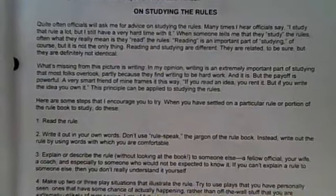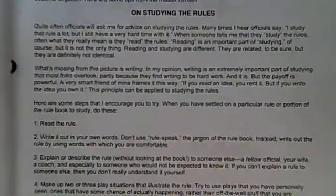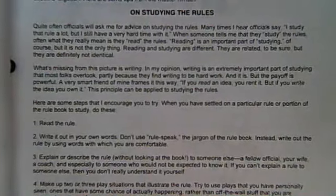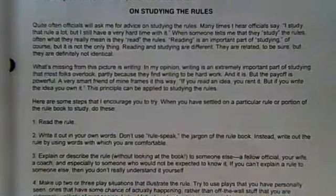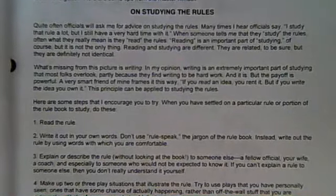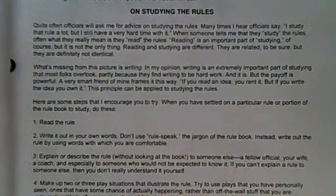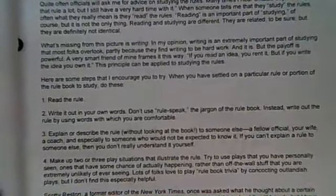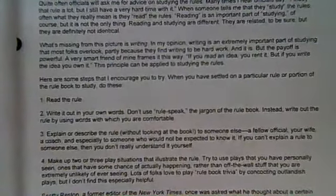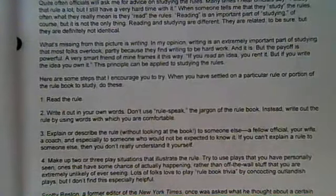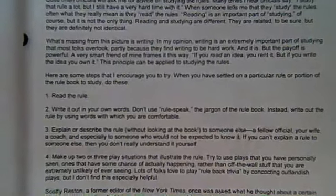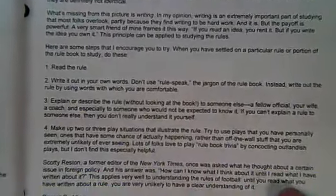Rogers Reading's tips for studying a rule: First, read the rule. Second, write it out in your own words — don't use rule-book jargon; instead write using words you're comfortable with. Third, explain or describe the rule without looking at the book to someone else — a fellow official, your wife, a coach, or especially someone who wouldn't be expected to know it. If you can't explain the rule to someone else, then you don't really understand it yourself. Training, teaching, and learning can all be mixed together.